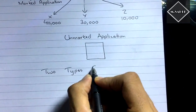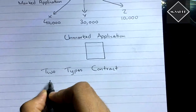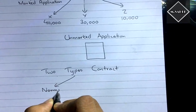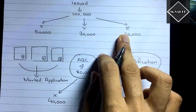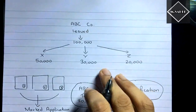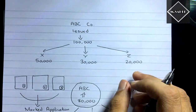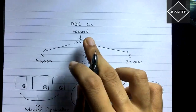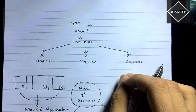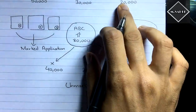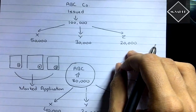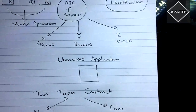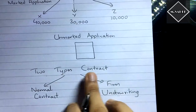There are two types of contracts in underwriting. The first is the normal contract, which is what we've seen so far — liability arises at the end based on deficiency. The second is called firm underwriting, where the underwriter, at the very beginning, expresses interest and commits to purchasing a fixed number of shares irrespective of public subscription.